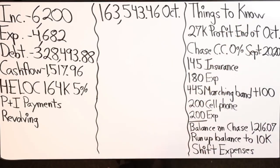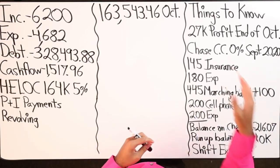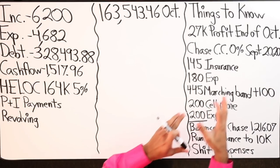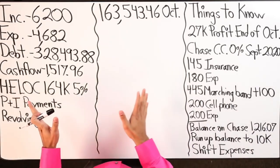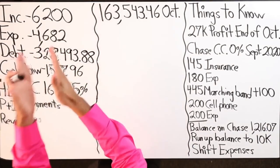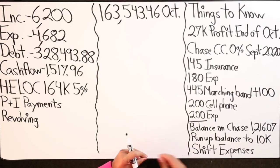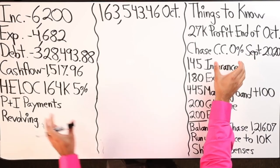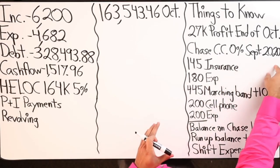First, he has a fix-and-flip going on, and at the end of October he's looking to profit about $27,000 — cash we can put somewhere to pay off debt. Second, we have a Chase credit card with a balance of $1,216.07 at zero percent interest, giving us two debt tools: the HELOC and the 0% Chase card valid until September 2020.